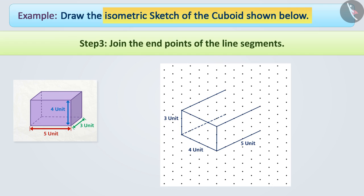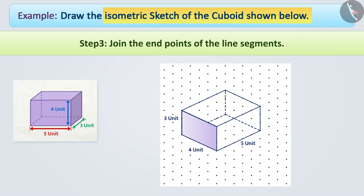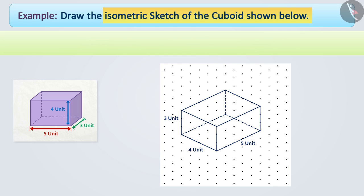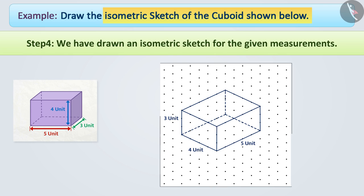Step 3: Now, we will join the end points of the line segments in this way so that we get the back part of the figure exactly the same as the rectangular face in the front. Step 4: In this way, we have drawn an isometric sketch for the given measurements.